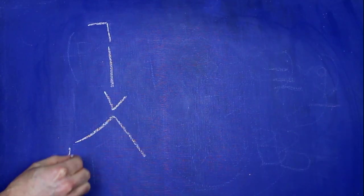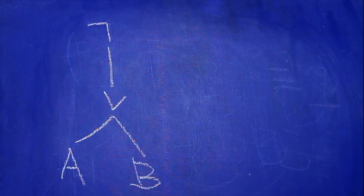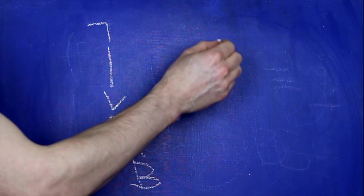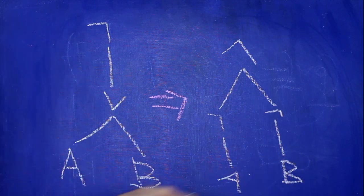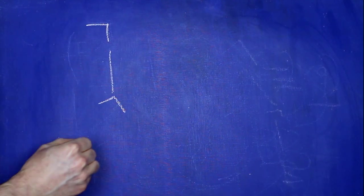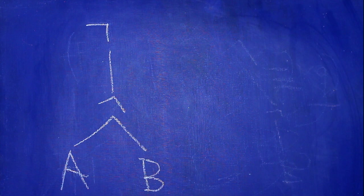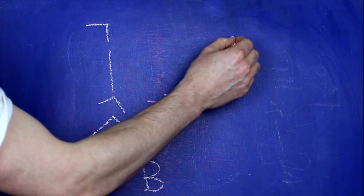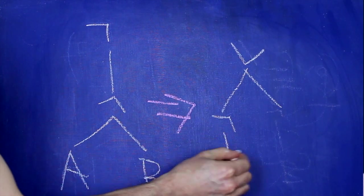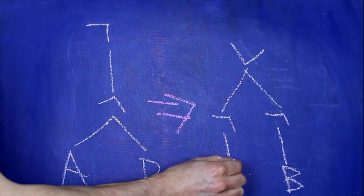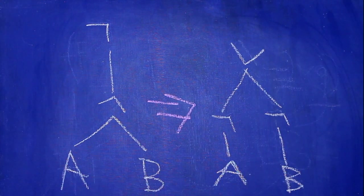When we have a negation in front of a disjunction, the tree looks like this, and we push that negation further down the tree. Then when we have a negation in front of a conjunction, the tree looks like this, and again, we're going to push that negation down the tree.